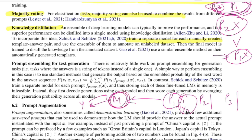This produces models mp1, mp2, and mp3, each fine-tuned to handle its specific prompt's formatting. You then take an unlabeled dataset and annotate it using ensemble predictions from mp1, mp2, and mp3 — via majority voting, averaging, or weighted averaging. A final model is trained on this annotated data, capturing the combined power of all three prompt-specific models.